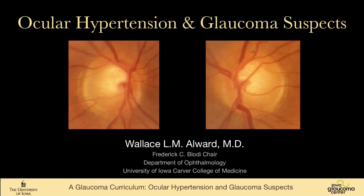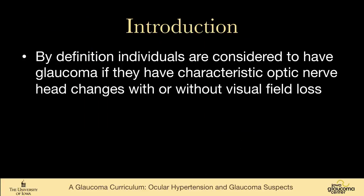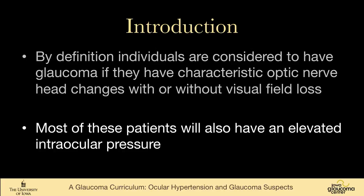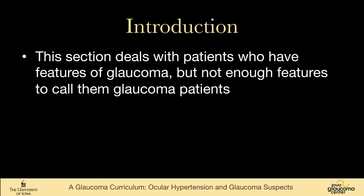We're going to talk briefly about ocular hypertension and glaucoma suspects. By definition, individuals are considered to have glaucoma if they have characteristic optic nerve head changes with or without visual field loss, and most of these patients will also have an elevated intraocular pressure. This section deals with patients who have features of glaucoma, but not enough features to call them glaucoma patients.